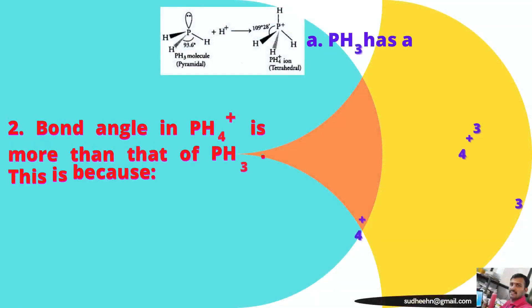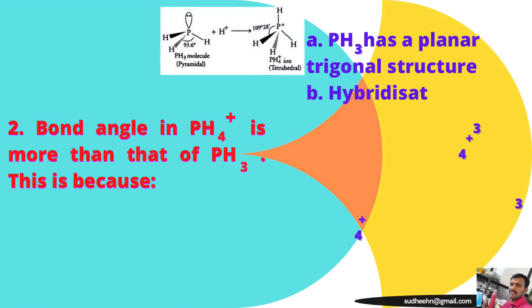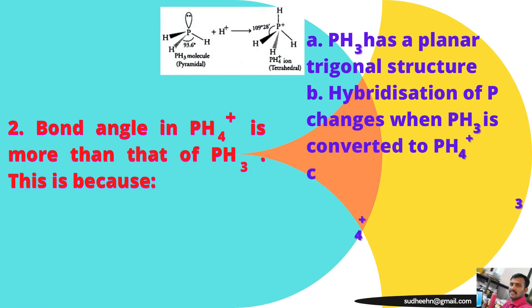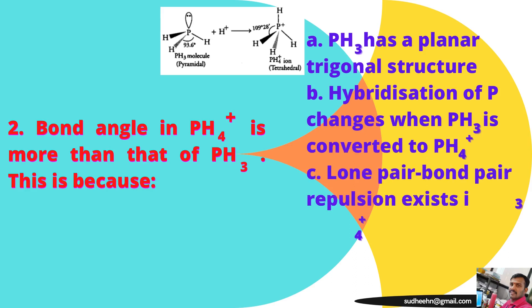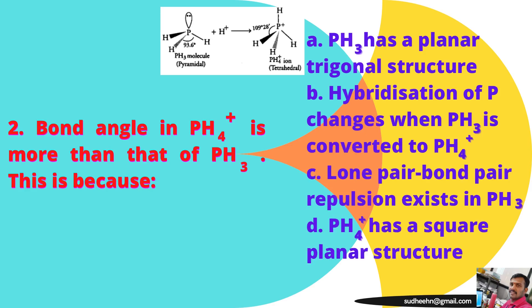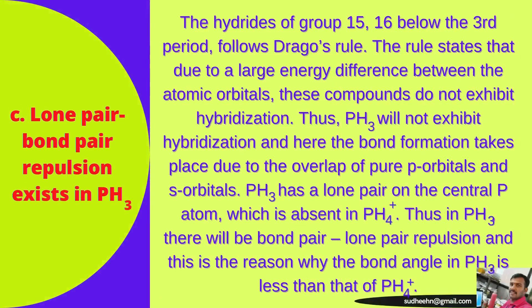Question two: the bond angle in phosphonium ion is more than that of phosphorus hydride. Why? Option C is the right answer — lone pair bond pair repulsion exists in PH3, that is phosphorus hydride. PH4+ has a tetrahedral structure, not square planar.